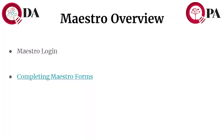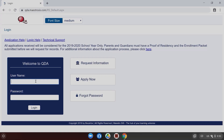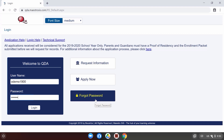Maestro Overview. Maestro Login. Completing Maestro Forms. Your Maestro username and password can be found in your information packet or your instructional supervisor assignment email. Please click the link to watch a video on how to navigate Maestro to complete forms. Enter your username and password that was generated during the application process. If you do not remember the account credentials, you may contact your instructional supervisor, the QDA office, or use the forgot password link in the bottom right corner.